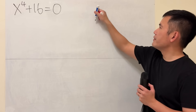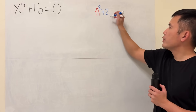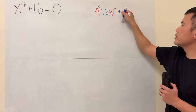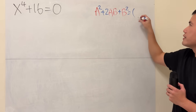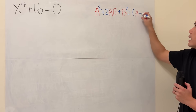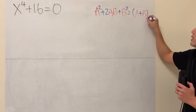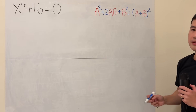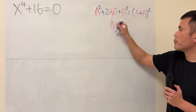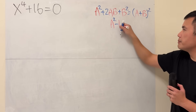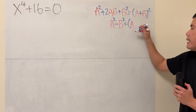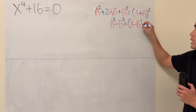We know that if we have a-squared plus 2ab plus b-squared, we can factor this as a perfect square: a plus b, squared. We will also need the difference of two-squares formula, which is a-squared minus b-squared, equal to a minus b times a plus b.